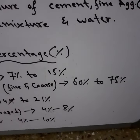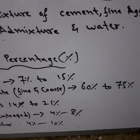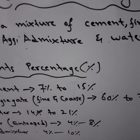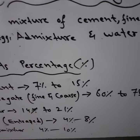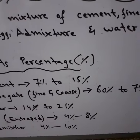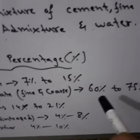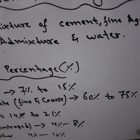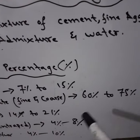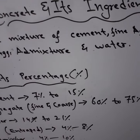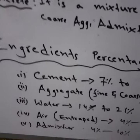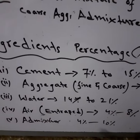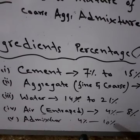The aggregate — fine plus coarse — makes up 60 to 75 percent. Coarse aggregate will be more and fine will be lesser. Coarse aggregate may be up to 40 percent and fine aggregate may be up to 20 percent.